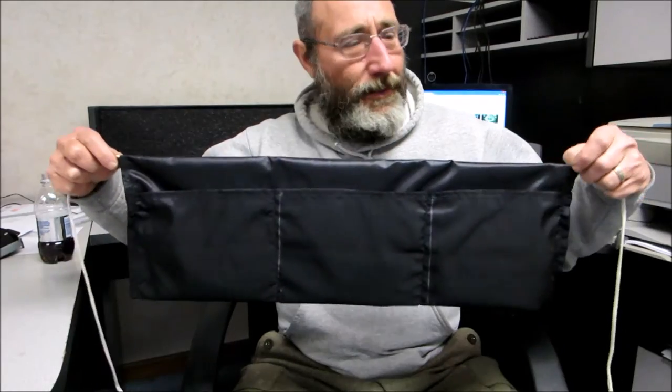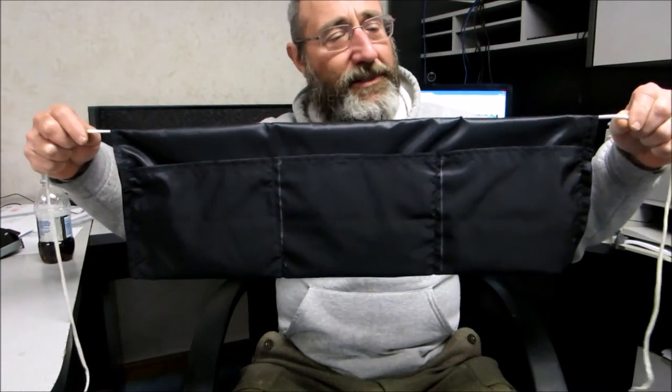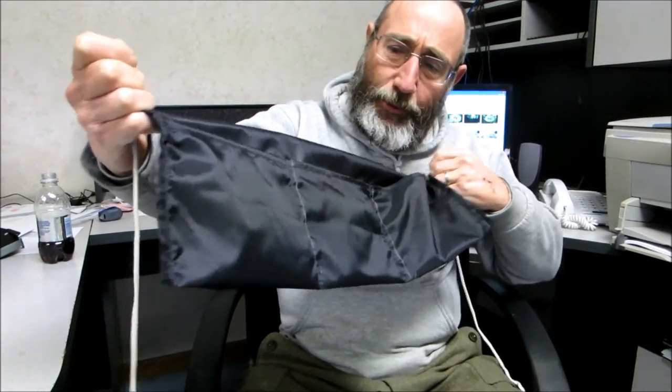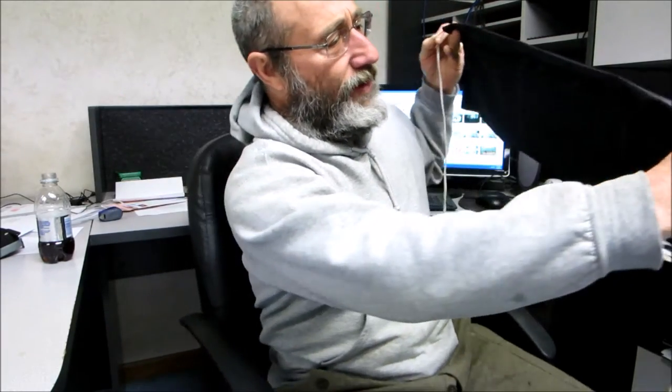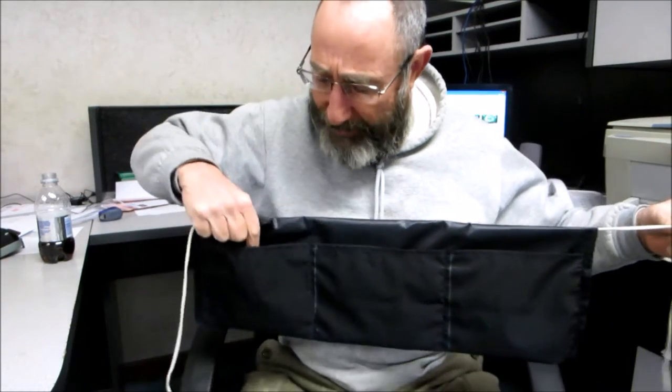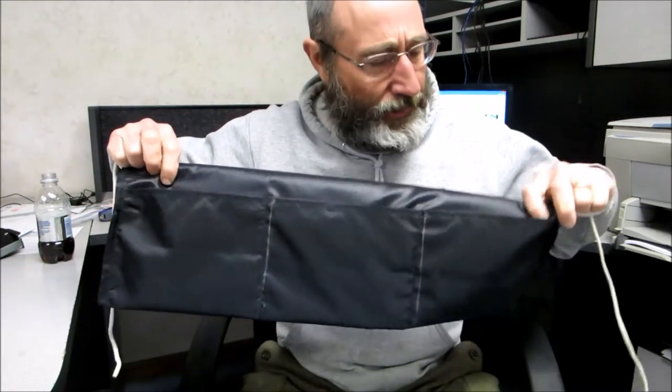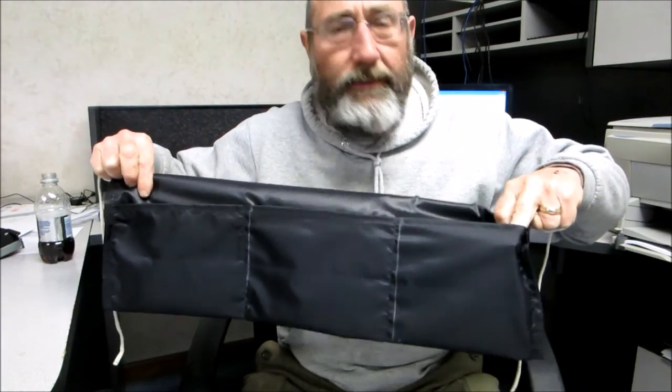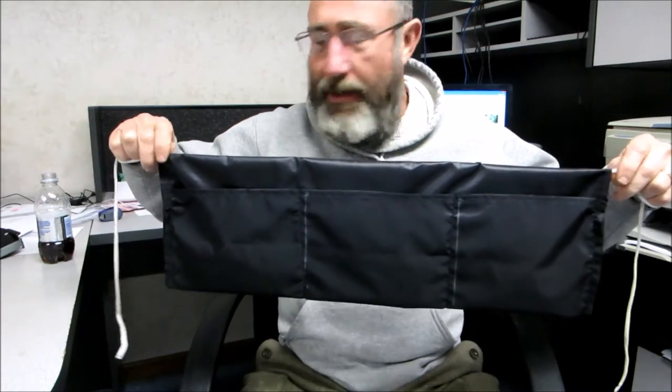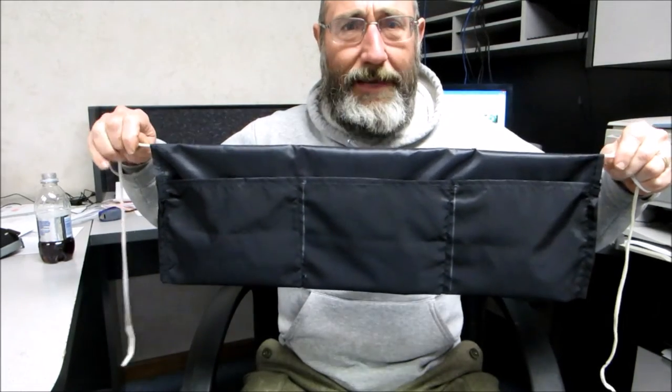By popular request, I'm going to show you today how to make this hammock ridgeline organizer. It's got six pockets, three on the front, three on the back. That way, when you're stretched out in your hammock, you'll have a place to put your wallet, cell phone, favorite beverage, maybe your pistol if you want a little extra insurance. So stick with me, and I'll step you through how to create this.